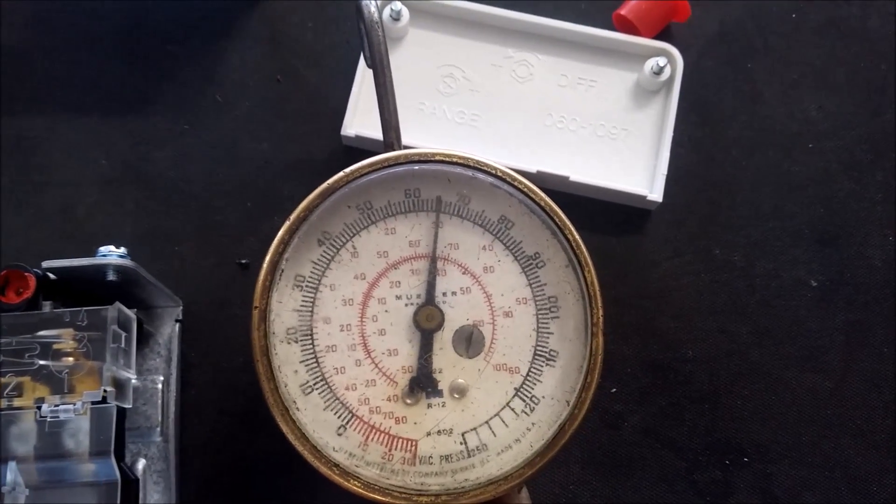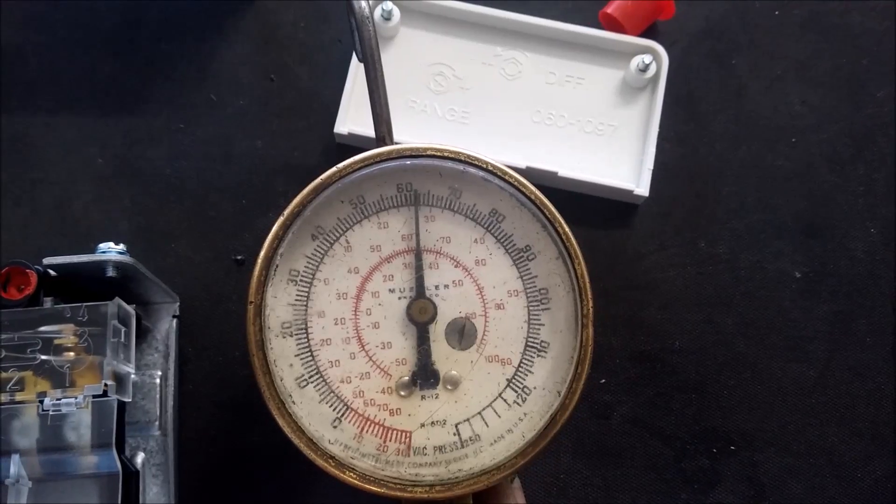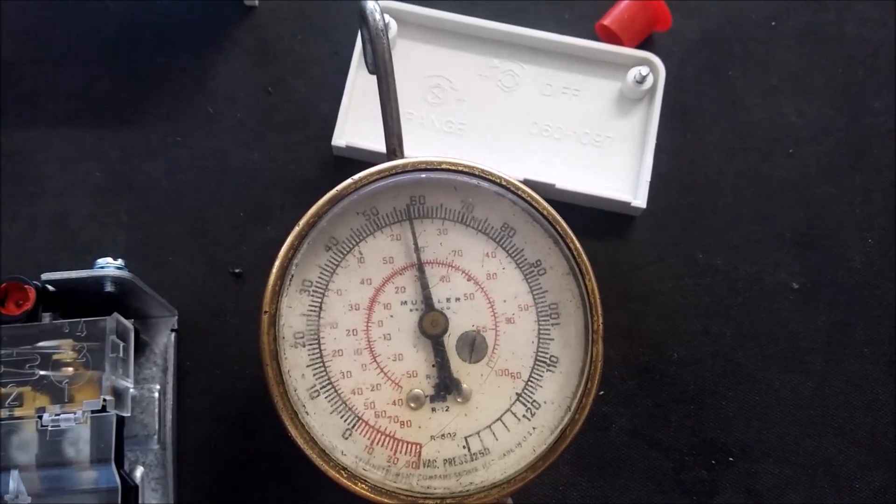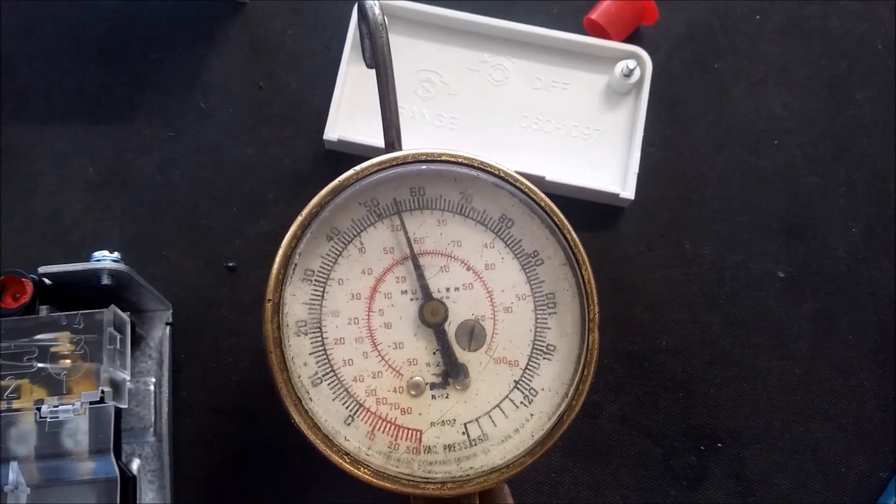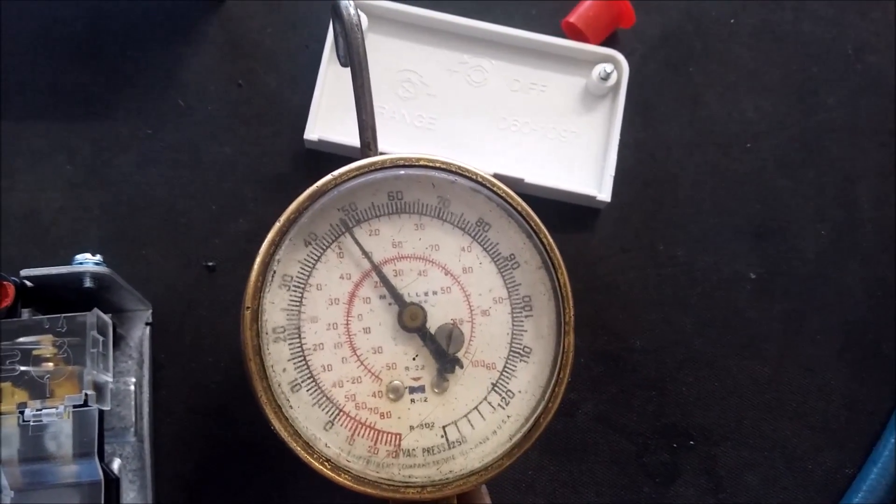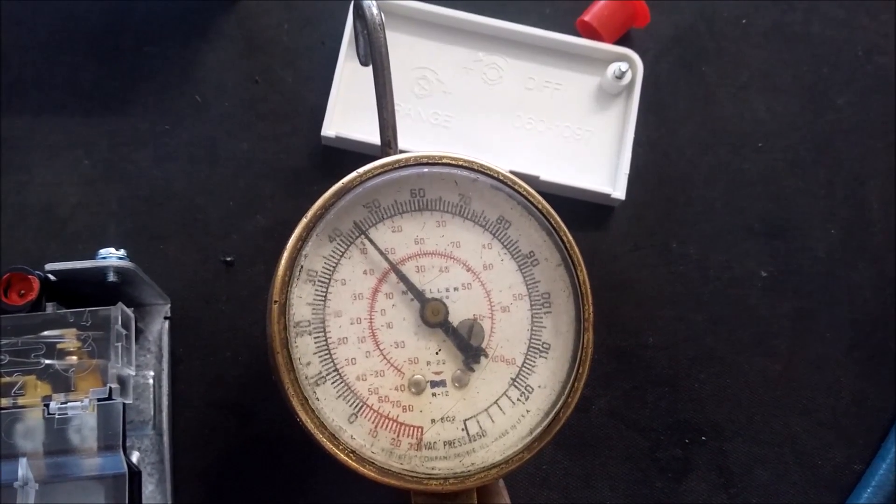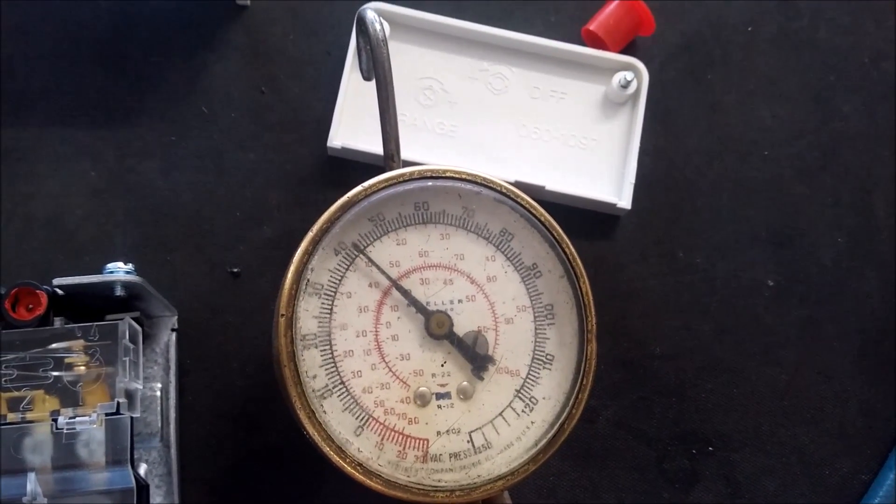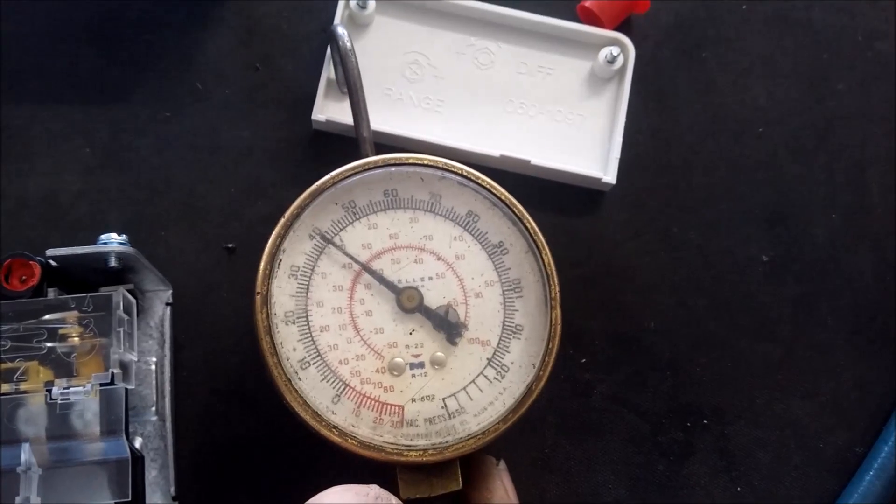And now the fridge is running and the pressure decreases. Somewhere between 45 and 40 pounds is normally where we want the motor to switch off again because that's the right temperature. And there we're about 42 or 43.